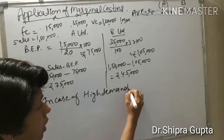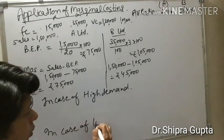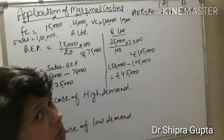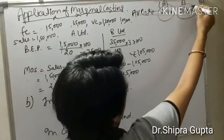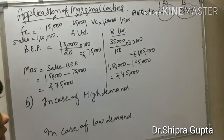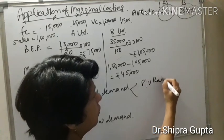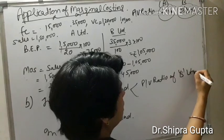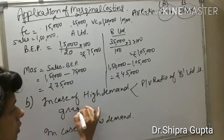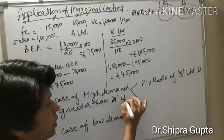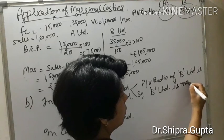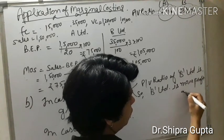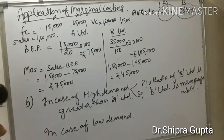Now we will do the second part. In the case of high demand versus low demand, which unit is better or more profitable? In the case of high demand, we consider PV ratio. According to PV ratio, B Limited is more beneficial than A Limited in this situation, because the PV ratio of B Limited is greater than that of A Limited. Therefore B Limited is more profitable in high demand.